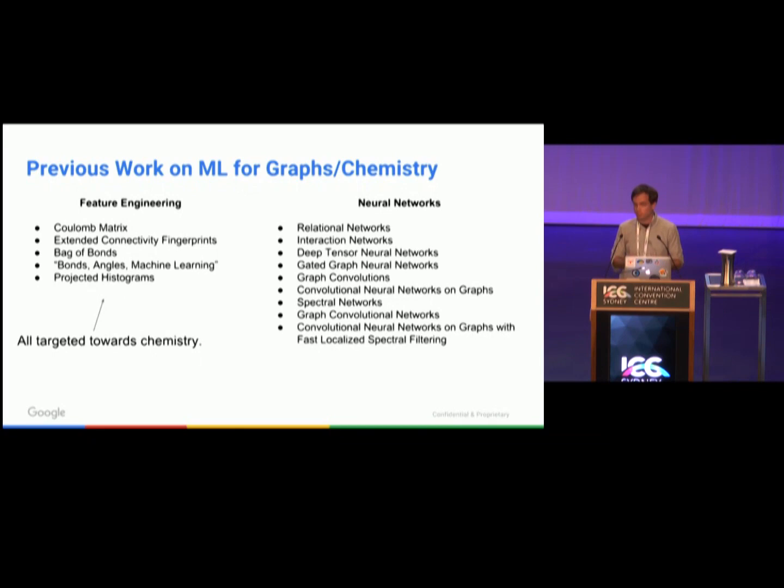We looked at this prior work and found that they're all actually very similar to each other. Our main contribution is to unify these nine different papers into a unified family. We introduced this mathematical framework, which we call message-passing neural networks, which generalize all of this prior work.